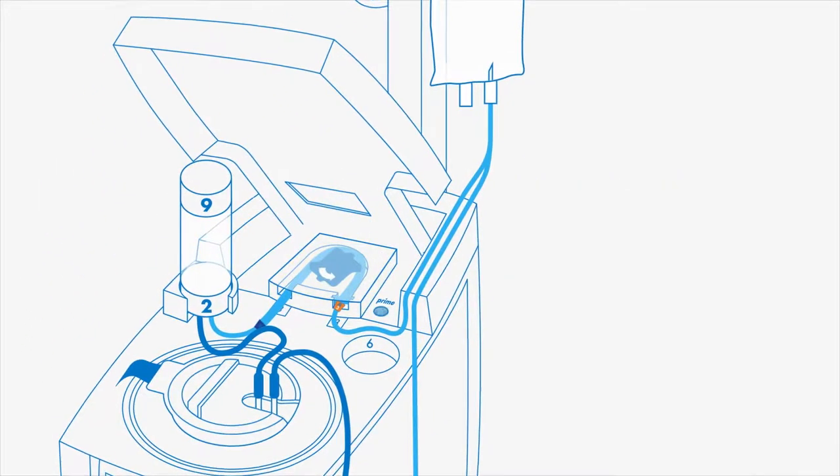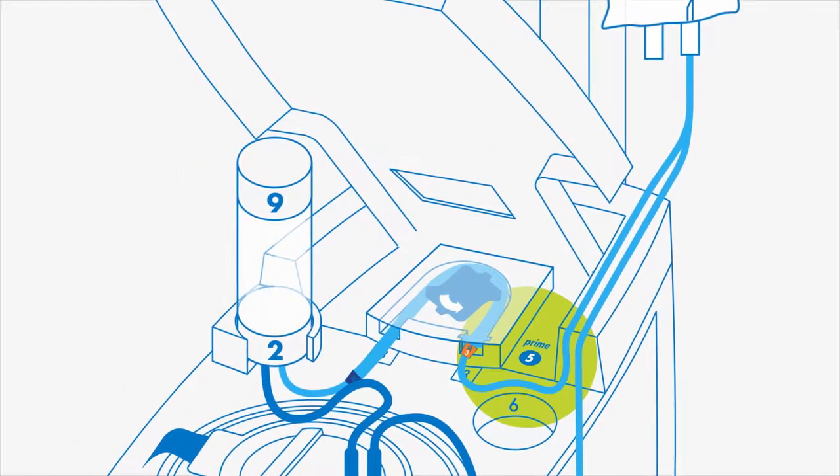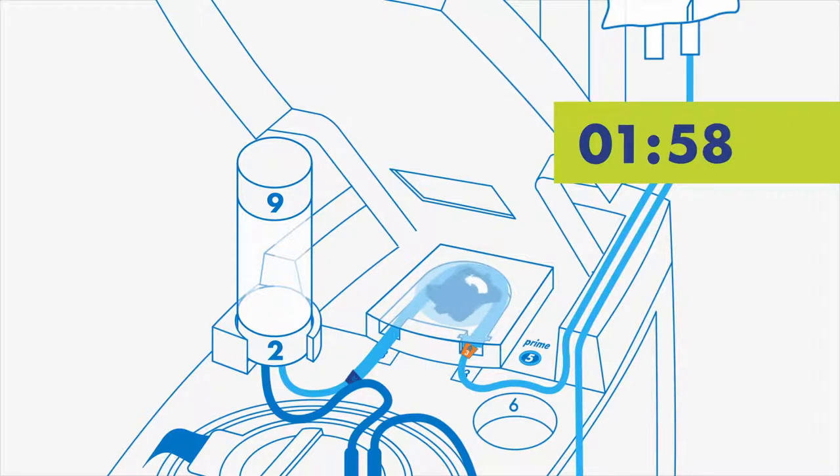Press and release the button labeled Prime, blue number 5. The button will light up. After 5 seconds, the pump light will come on and the pump will turn for 2 minutes to prime the tubing.